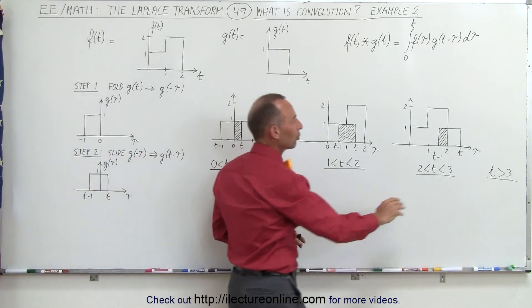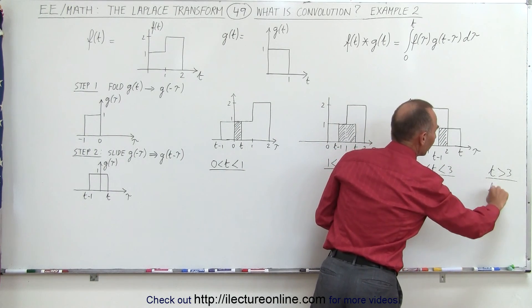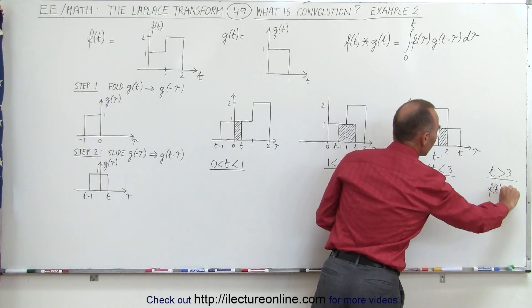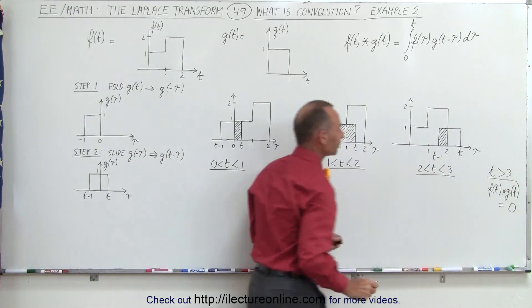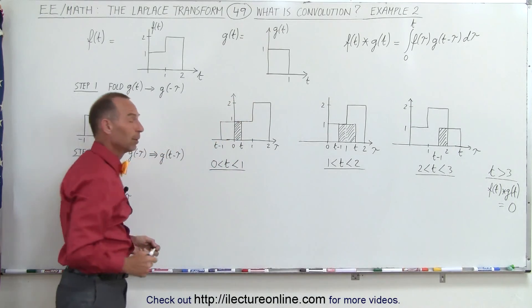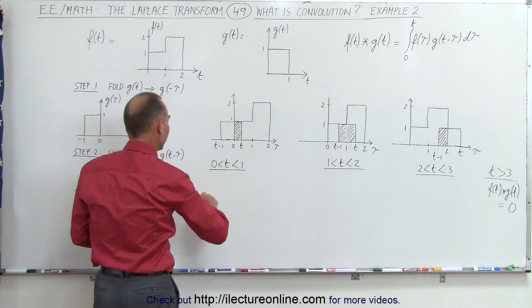Notice that once t is greater than 3, there's no longer any overlap, and the convolution of f of t and g of t at that point will be equal to 0. But what is it here? Remember, graphically the definition, it's going to be the height of the first function.